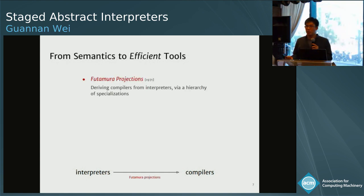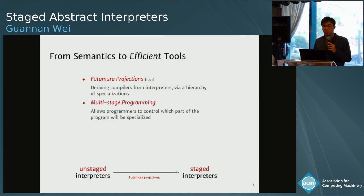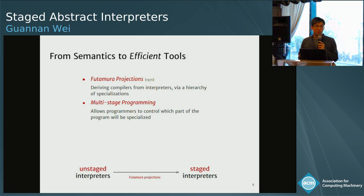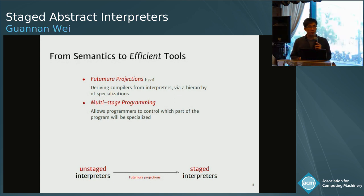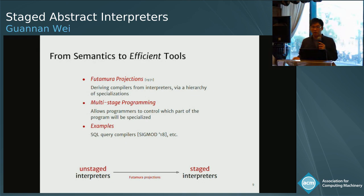Almost at the same time when abstract interpretation was proposed in the 1970s, a Japanese computer scientist observed a close relation between compilers and interpreters: we can derive compilers by specializing interpreters. This derivation or specialization can be mechanized or automated. One effective way to implement this Futamura projection is to use multi-stage programming. Multi-stage programming is a kind of programming paradigm that provides a way for programmers to control which part of the program should be specialized. With the help of multi-stage programming, we can directly turn an unstaged interpreter into a staged interpreter that is already a compiler.